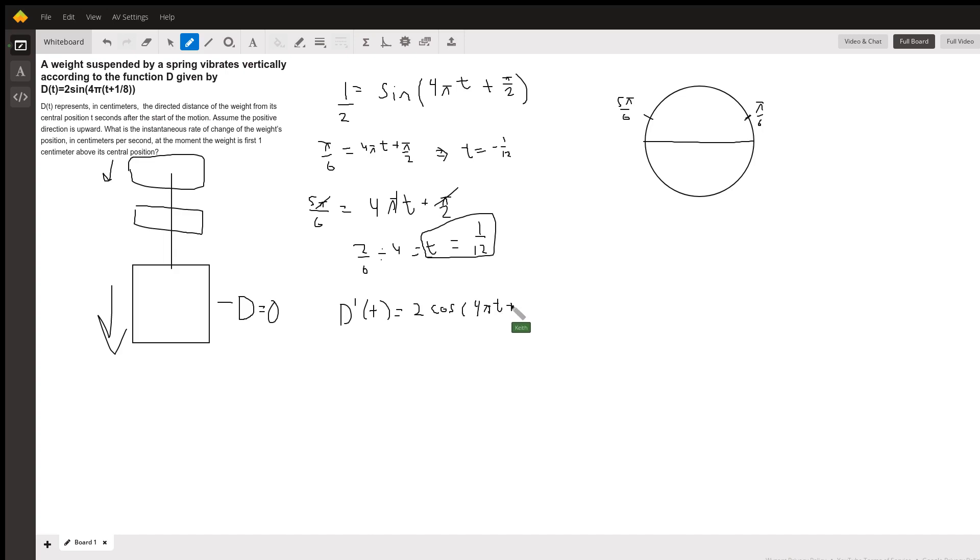But now remember we have the chain rule to deal with. So what's the derivative of the inside of this? Well, the inside is π/2 which comes up to nothing, plus 4πt. That t just gets derived away, so this is times 4π. Which means that the instantaneous rate of change of the weight's position at the moment the weight is first one centimeter above the central position will happen at time 1/12.